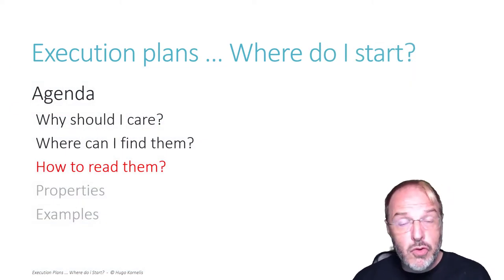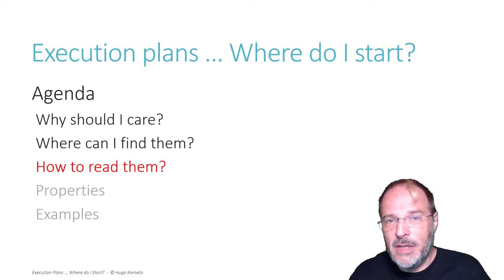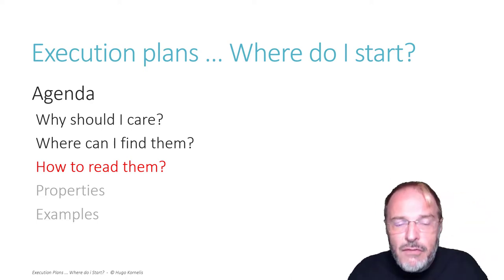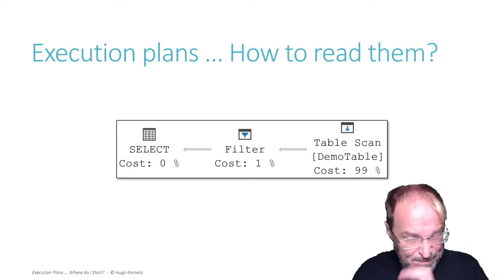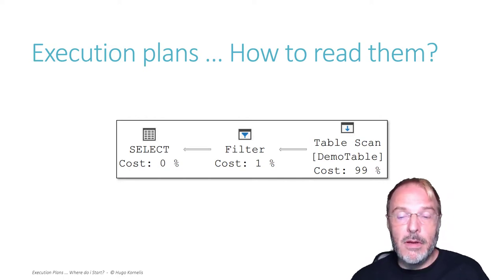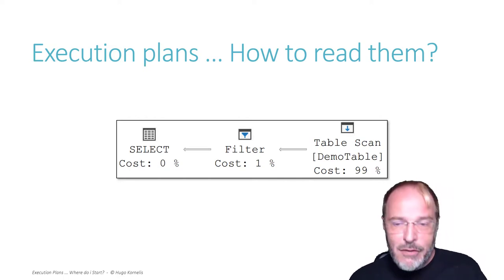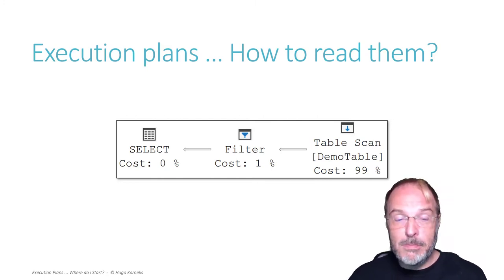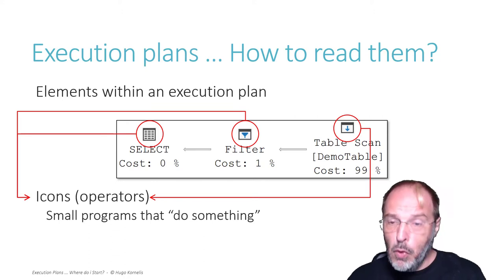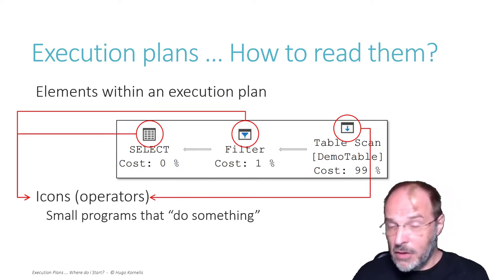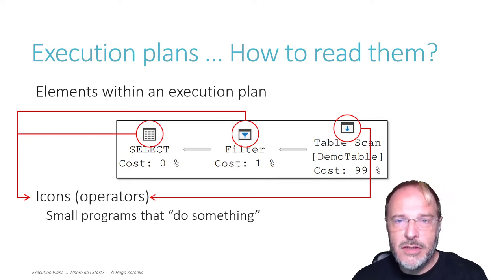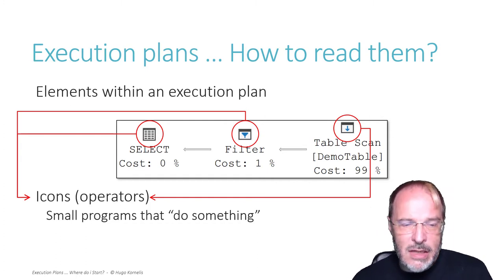I want to focus now on how to read execution plans, because it's a pretty picture on your screen, but if you've never seen it before and nobody tells you how to read it, what use is it? Here's an example of a very simple execution plan. There are two different elements represented. One is the icons - small pictures with a name underneath and some extra text. Those are called operators. Think of an operator as a small computer program that does one specialized task. Each operator has a specific task that it does, and that's the only thing it can do.